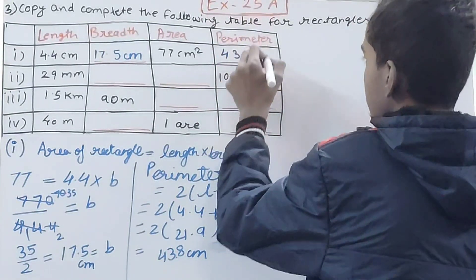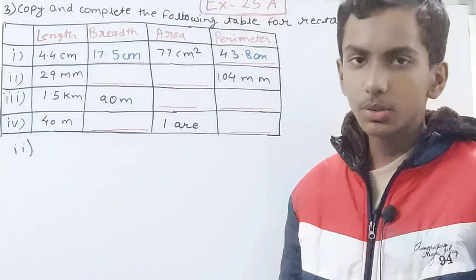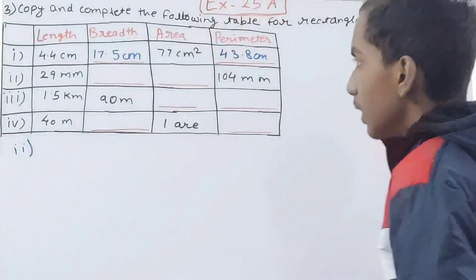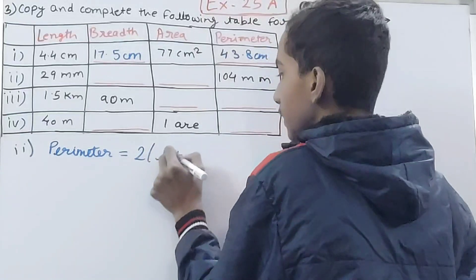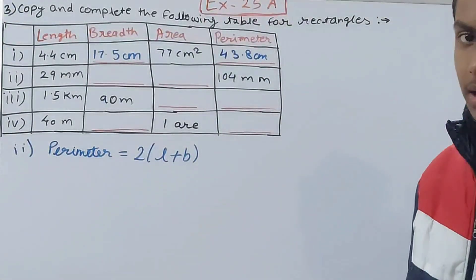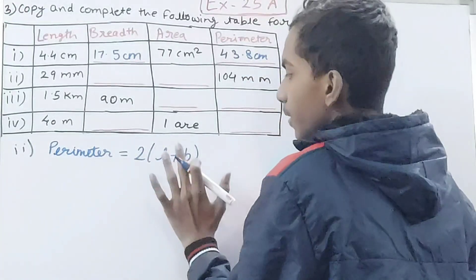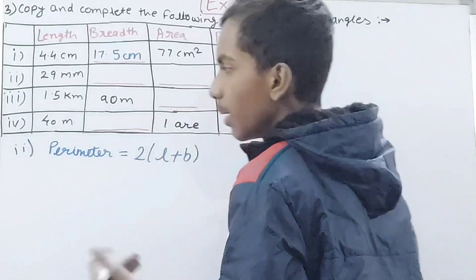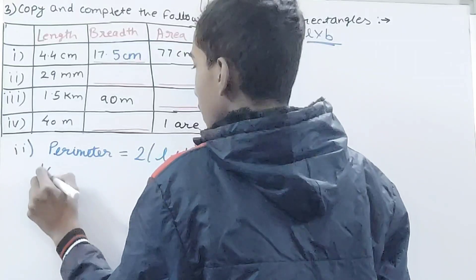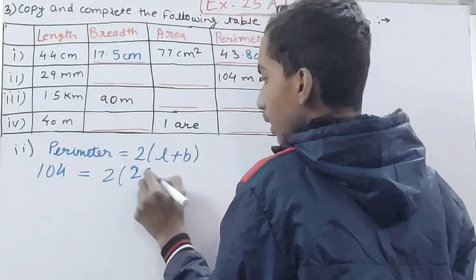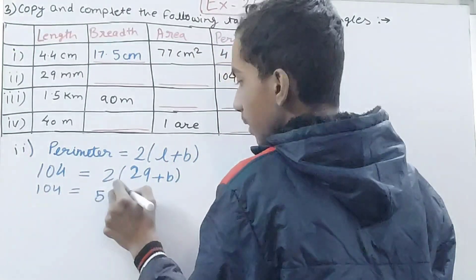For the second rectangle, length is 29 millimeters and perimeter is given as 104 millimeters. Perimeter = 2 × (l + b), so: 104 = 2 × (29 + b), which gives 104 = 58 + 2b. We need to find the breadth first before we can find the area.